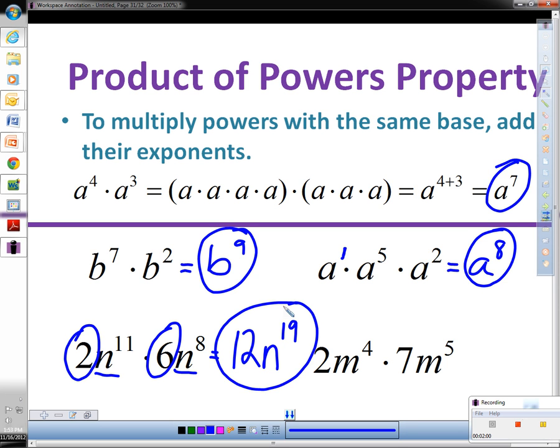In this last example, same kind of problem. We multiply the two and the seven together. Those numbers don't have exponents on them. So it's just two times seven, which is fourteen.